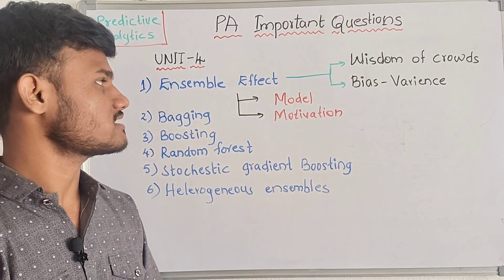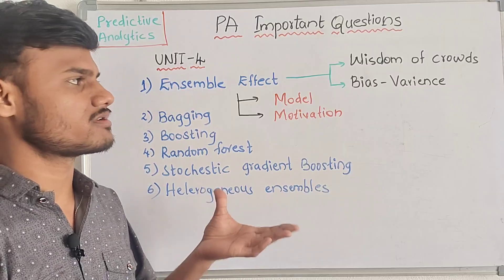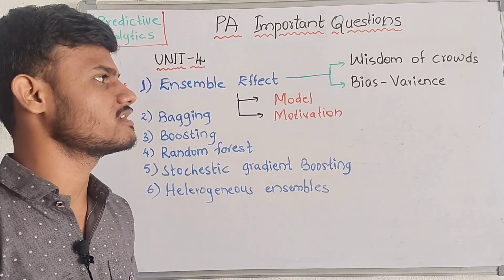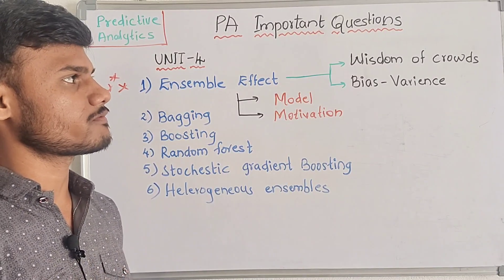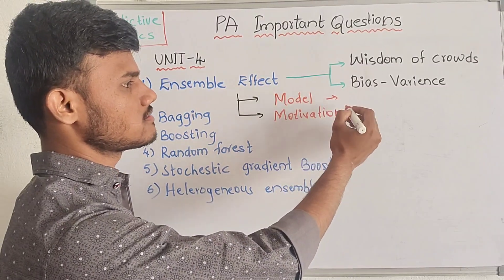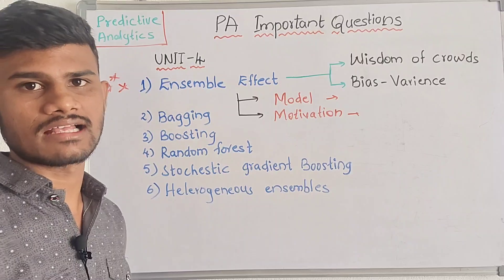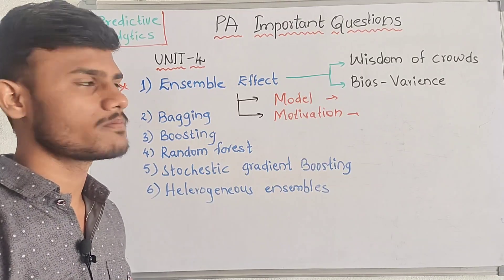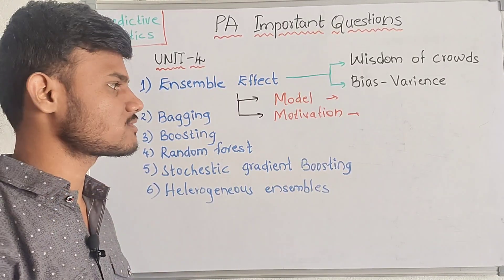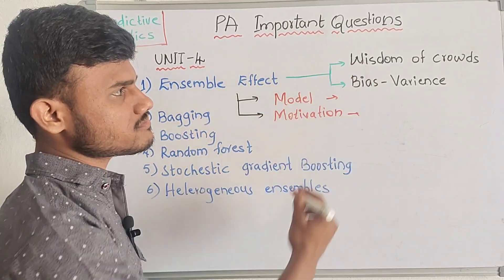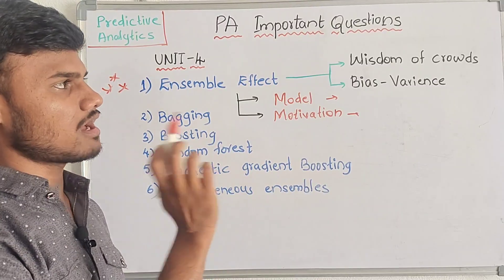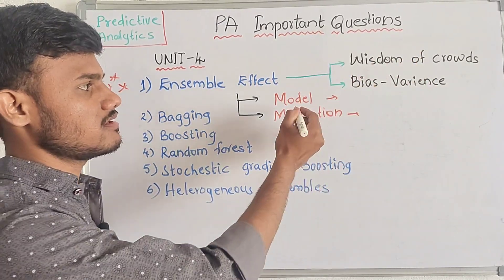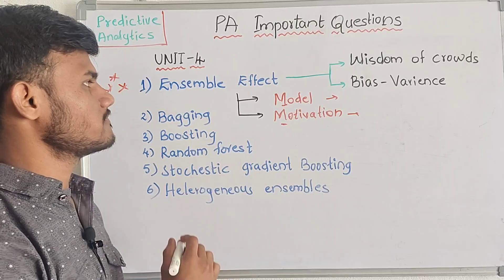Coming to our fourth unit. This fourth unit is completely about Ensembling Effect Learning. The first question is a very important question. If you need to cover these two or three questions — the first thing is modeling. A 3-to-4-page answer is perfect. This covers the motivation of Ensembling Effect and related individual questions in the syllabus.